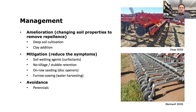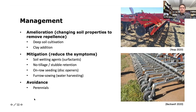Over 30 years of research, various technologies have been developed to reduce damage from water repellents. These can be broadly divided into amelioration — changing the soil properties to remove repellency; mitigation — reducing the symptoms but not the underlying cause; and avoidance — on some farms, farmers have simply changed to a different land use such as perennials, which don't suffer from the same problem.